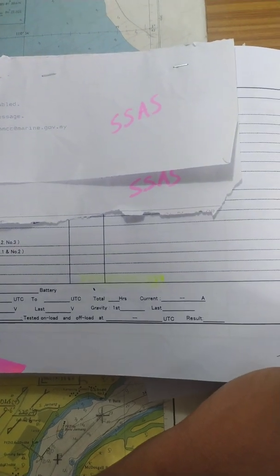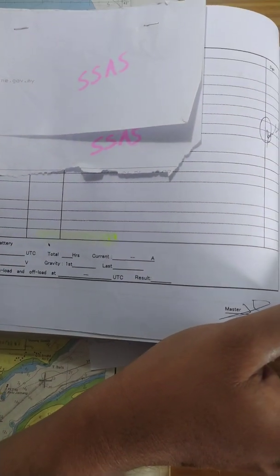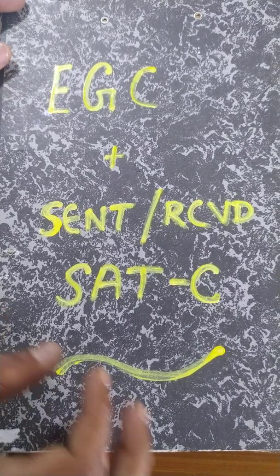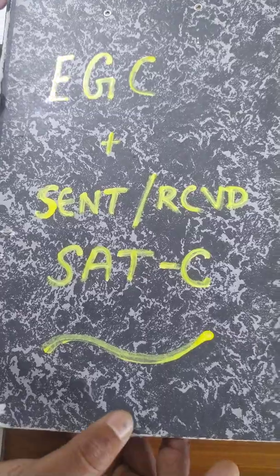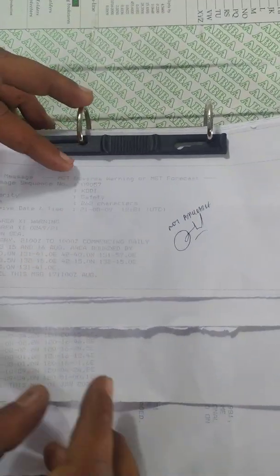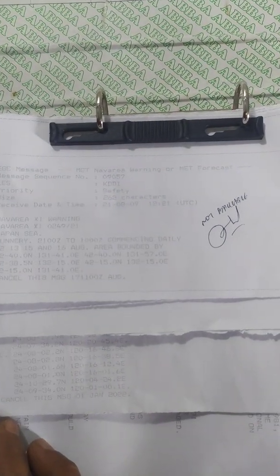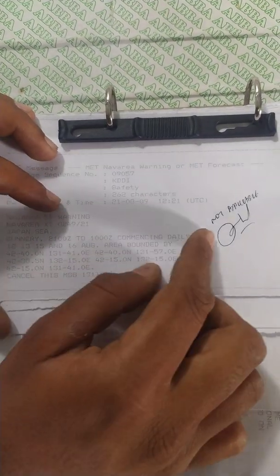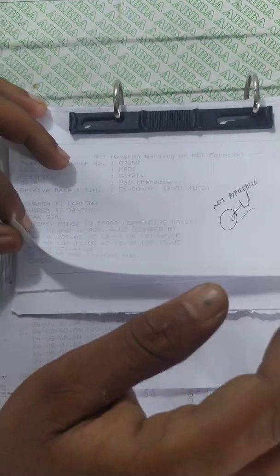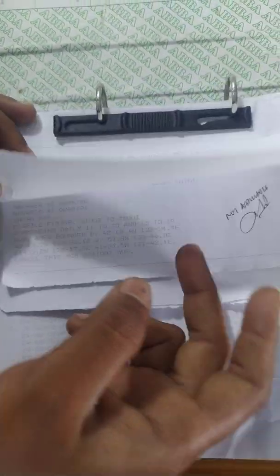Any messages that are not EGC messages I paste directly into the radio logbook. Now I will show you the EGC file. All EGC and SATC messages I have received I keep in a separate file. Since these are EGC messages, I need to determine if each one is applicable to me — if it is applicable I mark it on the chart, and if it is not applicable I write that down. This list has to be maintained.